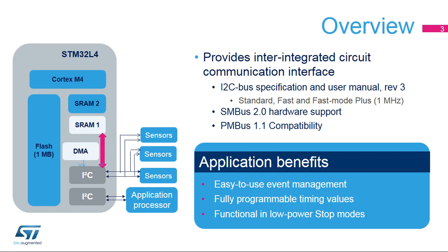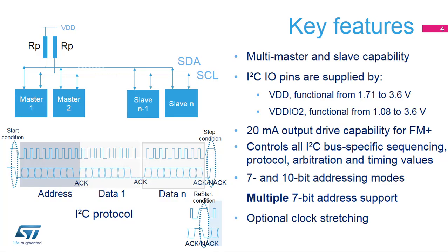This peripheral provides an easy-to-use interface with very simple software programming and full timing flexibility. Additionally, the I2C peripheral is functional in low-power stop modes. The I2C peripheral supports multi-master and slave modes. The I2C IO pins must be configured in Open Drain Mode, and the logic high level is driven by an external pull-up. The I2C alternate functions are available on IO pins supplied by VDD, which can be from 1.71 to 3.6 volts, and on IO pins supplied by VDD IO2, which can be from 1.08 to 3.6 volts, allowing communication with external chips at voltages different from the STM32L4 main power supply.